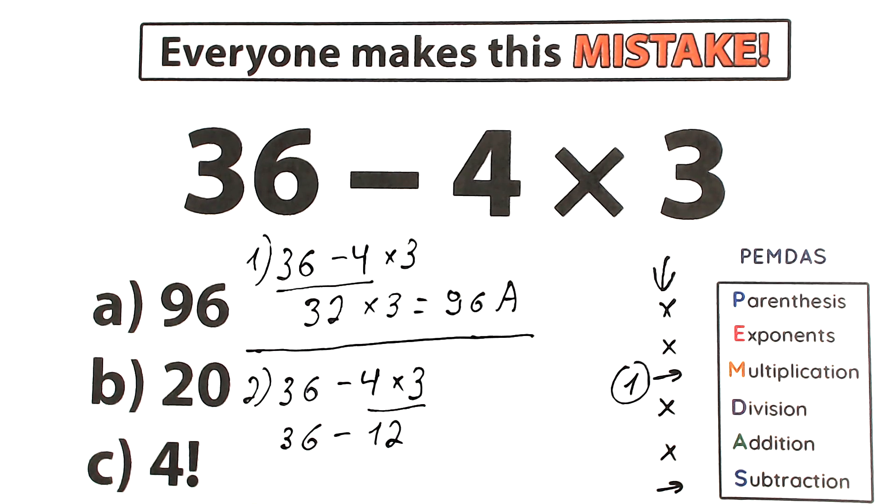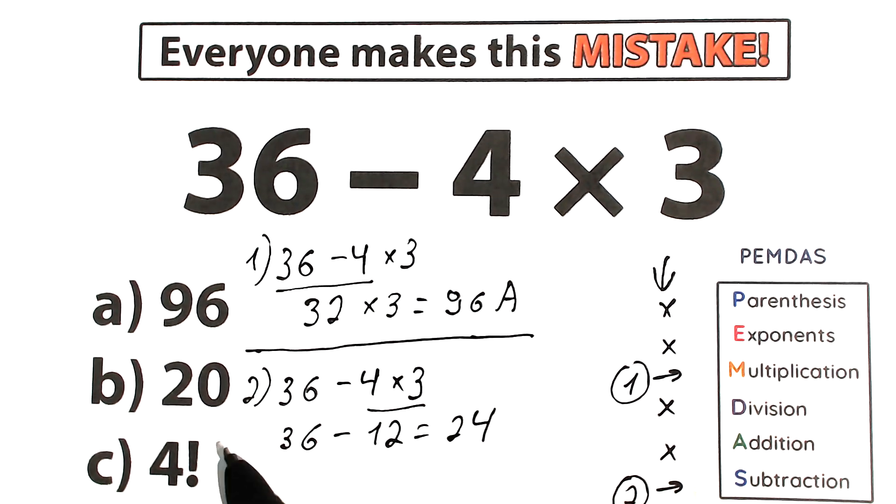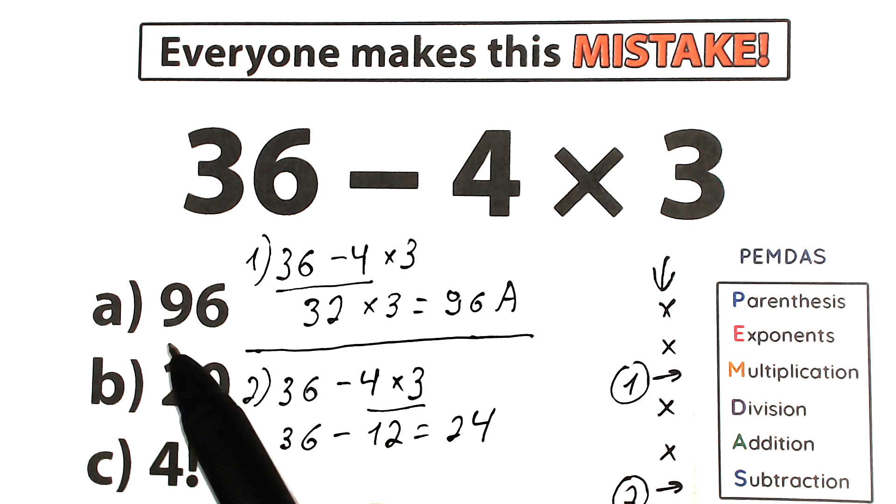Our second step is subtraction. Yes, we should subtract 36 minus 12, which is equal to 24. But let's look, we don't have this option guys.